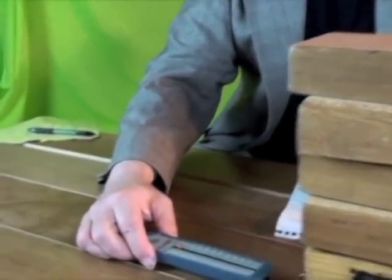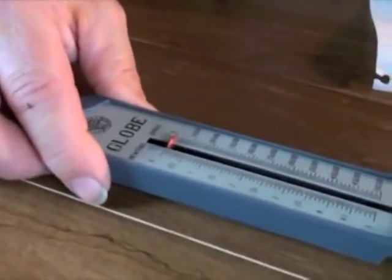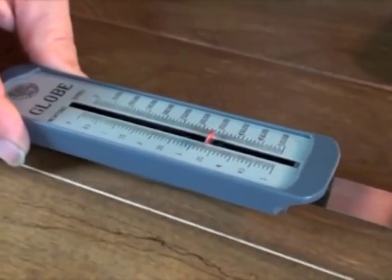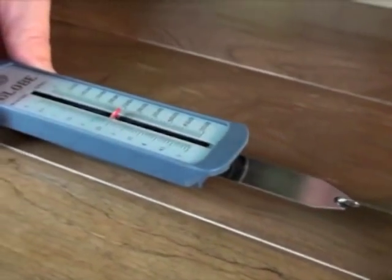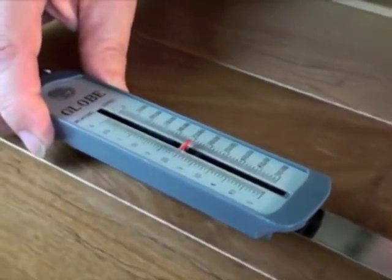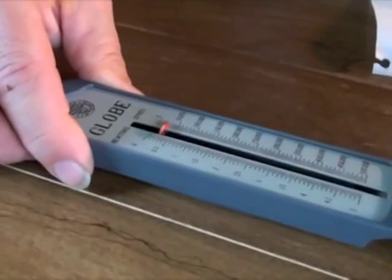I'm going to pull a large stack of blocks, and I want you to watch the spring balance. It increases, increases, the block doesn't move, suddenly a threshold is reached, and I can pull it now at a constant velocity with less force.